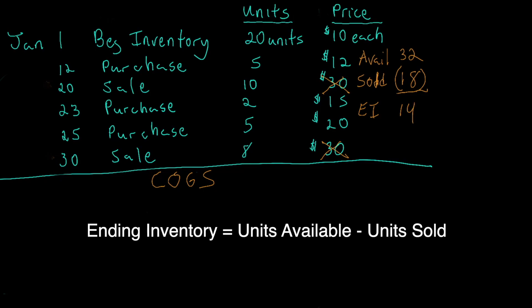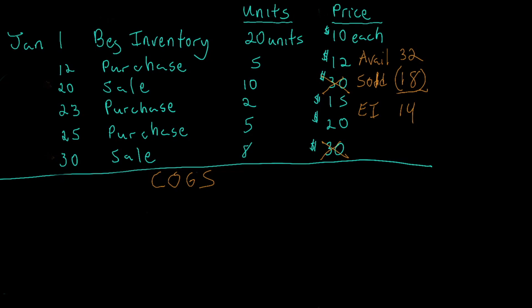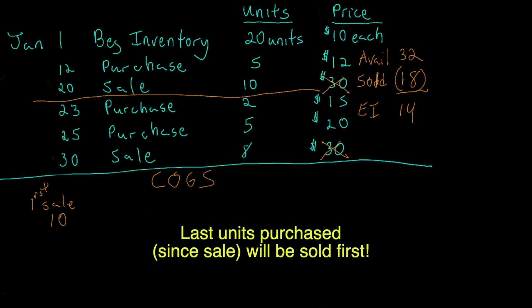Regardless of the method used, this information remains valid — we will always have 14 units in ending inventory and always sell 18 units throughout the period. The only difference between methods is the cost. Now we go into cost of goods sold. Since it's the perpetual method, we break sales down chronologically. The very first sale occurred on the 20th — 10 units. The object is to account for those 10 units: where did they come from and how much did they cost us? We're practicing LIFO, so the very last purchase will be the first to be sold.